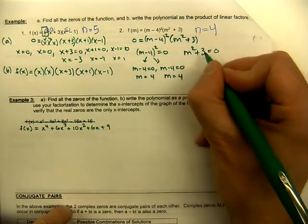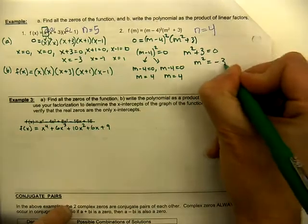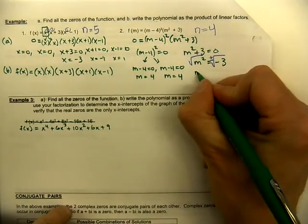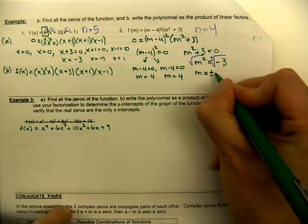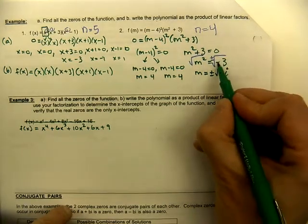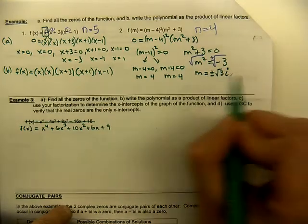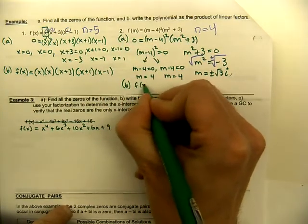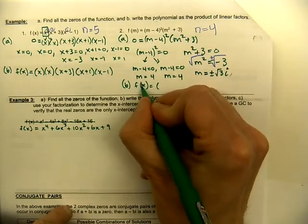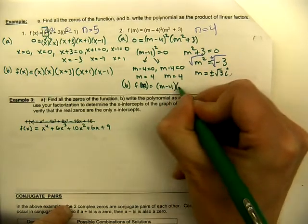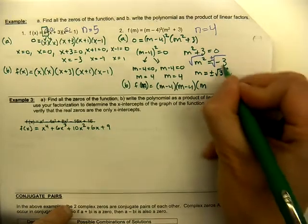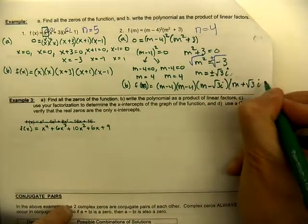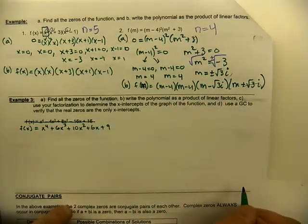For m squared plus three equals zero, we move the three to get m squared equals negative three. Taking the square root of both sides gives plus or minus root three times i, since the square root of negative one is i. So we have four zeros total — m equals four (twice) and m equals plus or minus root three i — which matches the fourth degree polynomial. Part B: the product of linear factors is f(m) = (m minus four)(m minus four)(m minus root three i)(m plus root three i).